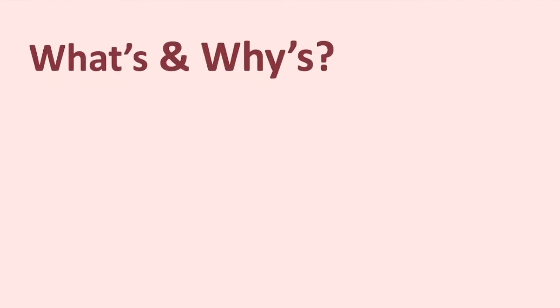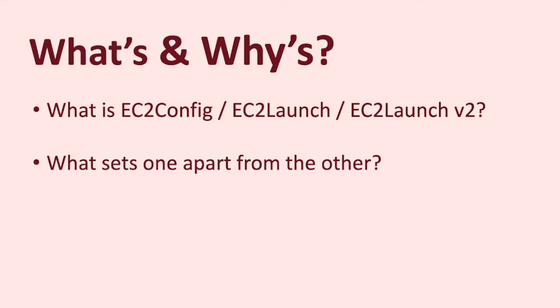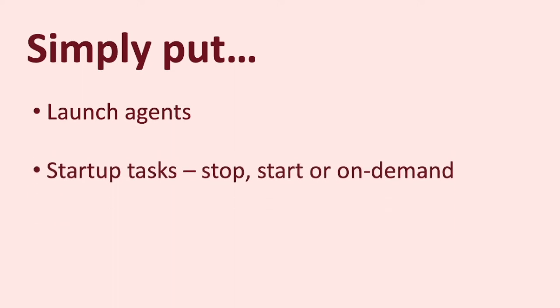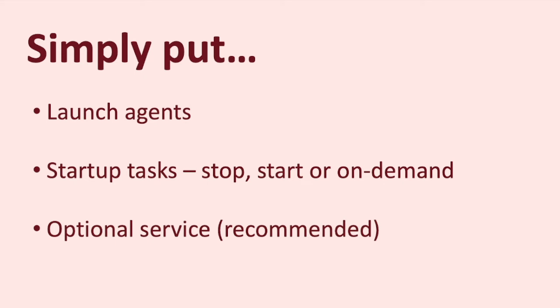Before we get to the hows, I want to answer the whats and the whys. What is EC2 config, EC2 launch, and EC2 launch V2? What sets one apart from the other, and why do you even need this? To keep it simple, they are launch agents on EC2 Windows that start when an instance boots. They perform startup tasks each time you stop or start the instance, and some of those tasks can even be run on demand. They are optional services but recommended, since you get access to certain advanced features that make configuring and working with Windows on EC2 a lot simpler.